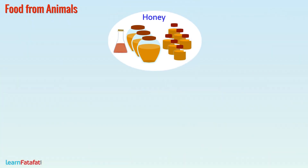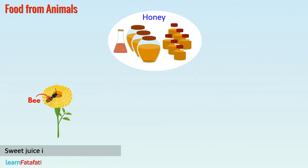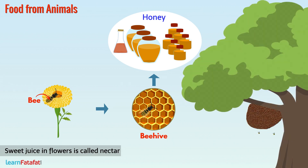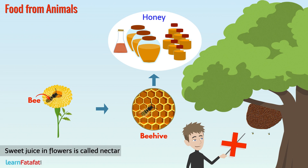We obtain honey from honey bees. Bees collect sweet juice from flowers called nectar. They store nectar in their living place called beehives. From beehives, we obtain honey. You must have seen beehives hanging on a tree. Don't disturb the bees — they are very protective towards their enemies and their sting is very dangerous.